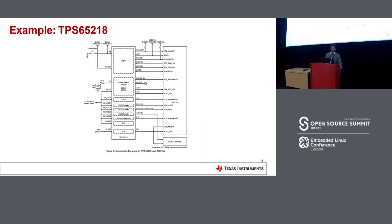Here's a quick example of a simple PMIC: the TPS65218, a TI part used to power up the AM437X family of SoCs. There are about four DC-DC converters feeding the core, MPU, and analog domains, and one LDO feeding some analog part, plus backup battery and GPIO support. This is a pretty simple PMIC that powers up a single-core processor.